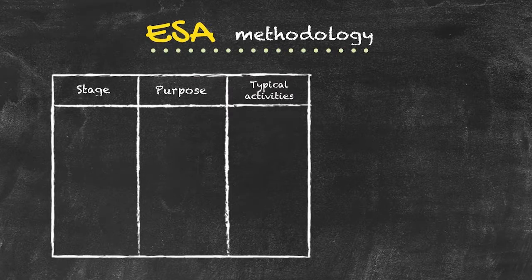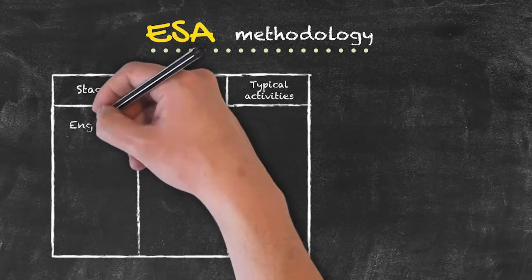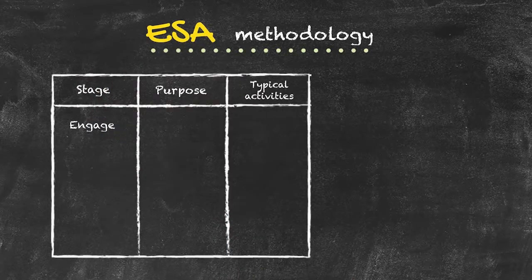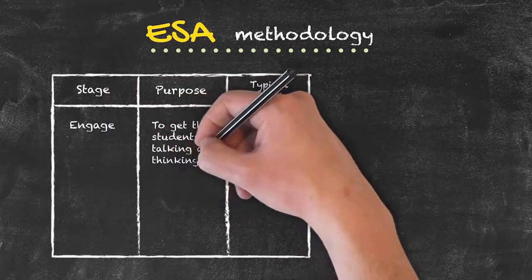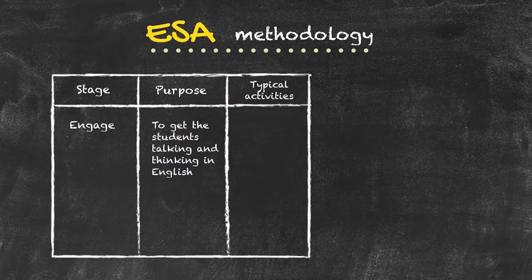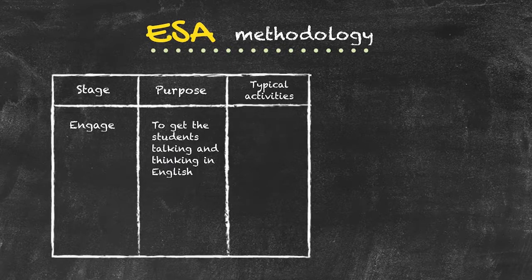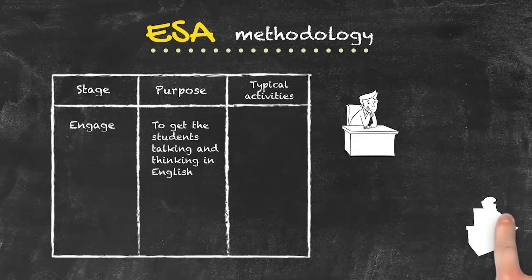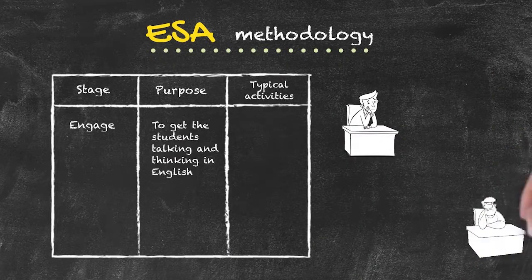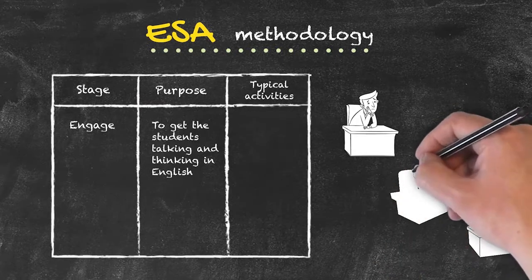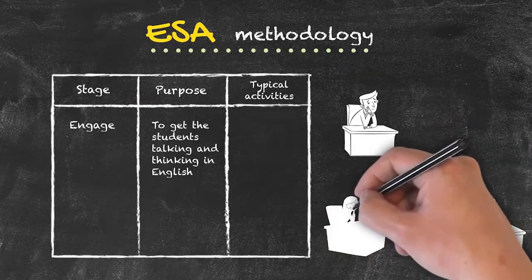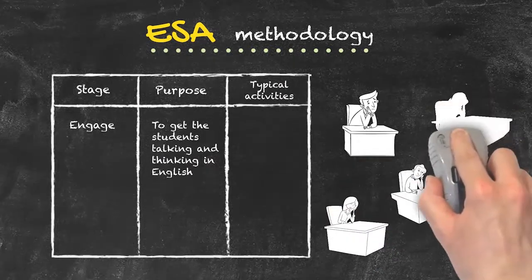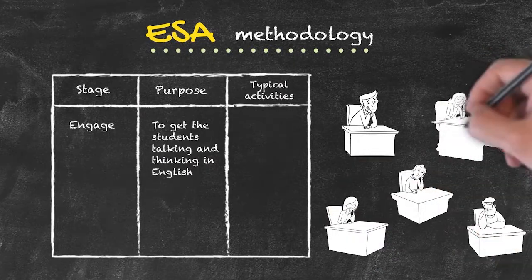The first stage is known as the Engage, and its sole purpose, as the name implies, is to get the students talking and thinking in English. There is no reason why students coming to your class should have said a single word of English up until that point in the day. So we cannot expect them to just come in and immediately start talking in English. We need an activity such as the Engage to get them warmed up.